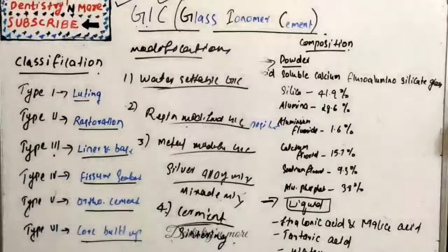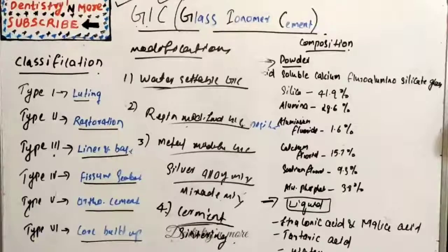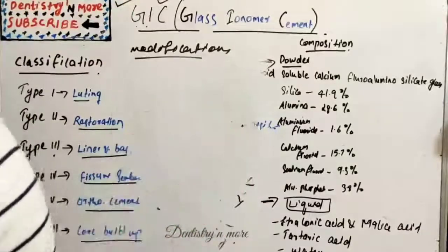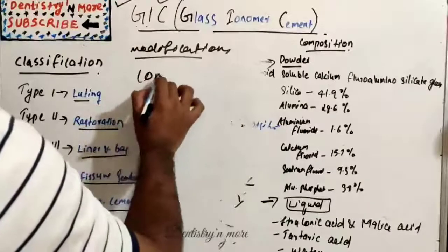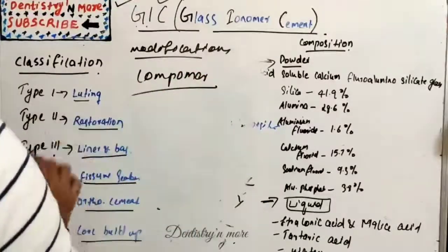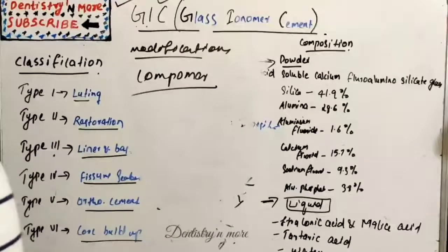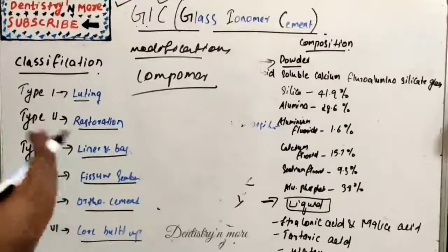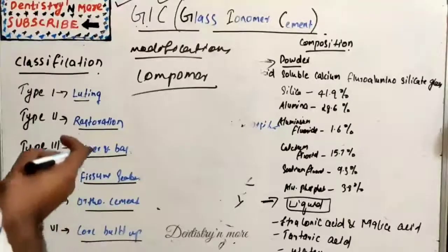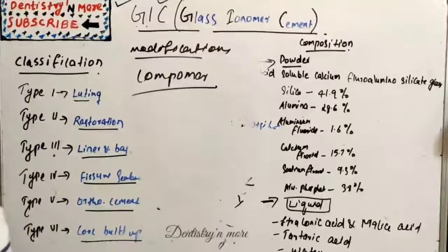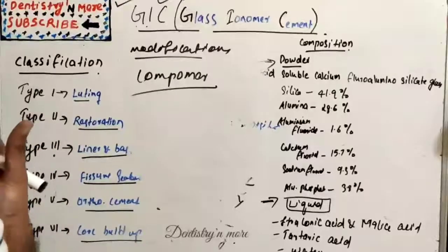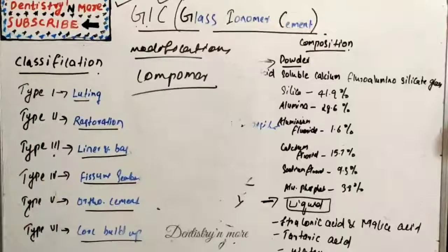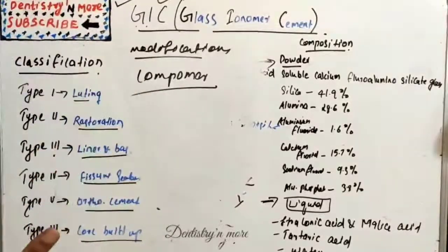The last one is compomer. Compomer is composite resin that uses an ionomer glass, which is a major component of Glass Ionomer, as the filler. Small quantity of dehydrated polyalkenoic acid is incorporated with filler particles. The setting reaction is by light activation, and the adhesive system used with compomer is based on acid etch found with all composite resins.